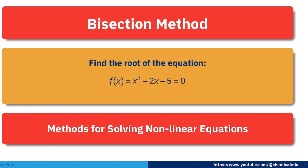Today I will talk about the bisection method for solving nonlinear equations. The nonlinear equation given is f(x) = x³ - 2x - 5 = 0. Using the bisection method, we can easily find the root of this equation.